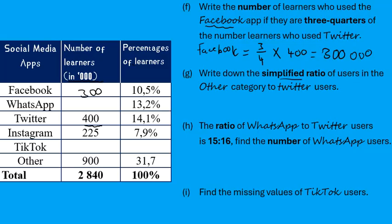Write down the simplified ratio of users in the 'Other' category to Twitter. Other is 902 and Twitter is 400, so the ratio is 902 : 400. We divide both sides by 100 to get the simplified ratio of 9 : 4. Don't swap it around, otherwise it will be wrong. Learners often feel the smaller number should be on the left, but that is not necessarily the case.